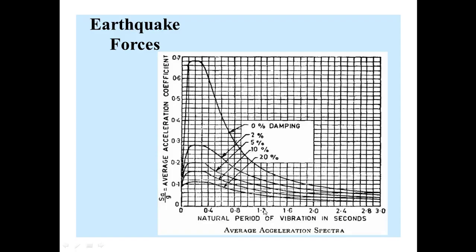The number of modes to be considered for seismic analysis shall be worked out corresponding to various modes or periods, and the damping and design force shall be computed. If actual response spectra is available, the same may be used directly. To find SA/G, we compute T first, then come to the graph and select the curve according to the damping of the structure. For example, if the structure has 5% damping and the natural period of vibration is 0.4, we select 0.4, go to the 5% damping curve, then read across to get SA/G — in this case approximately 0.18.